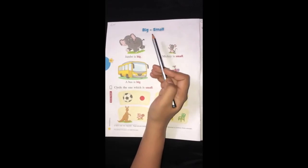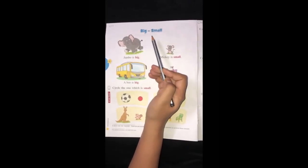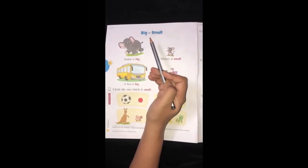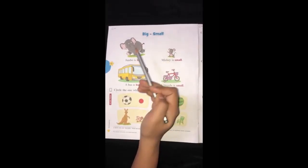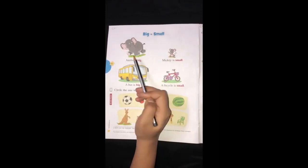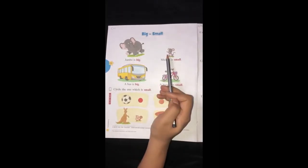As you know, when we compare two objects based on their size, we get big objects and small objects. Wow! Let's see. There are two animals, an elephant and a mouse.